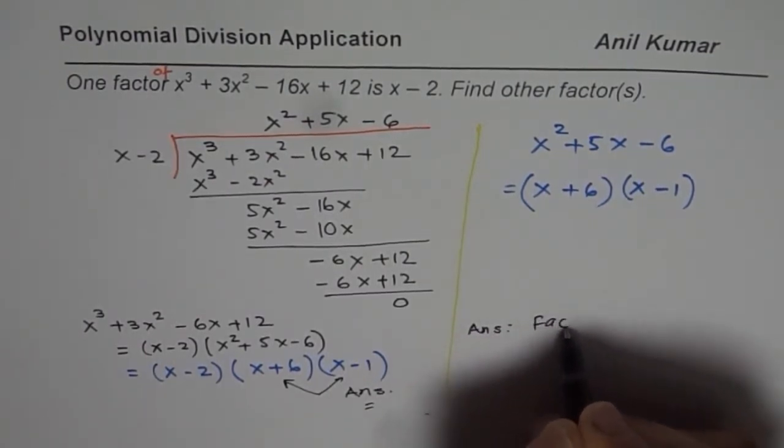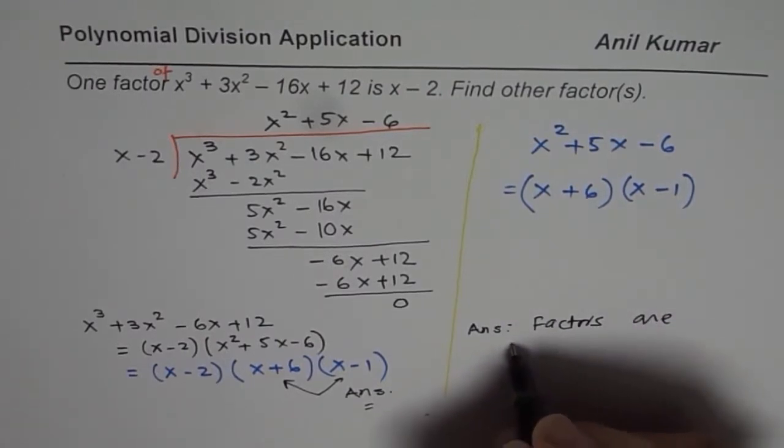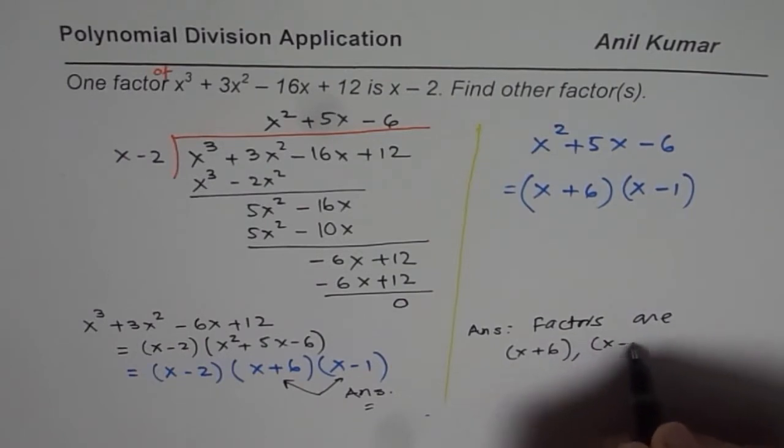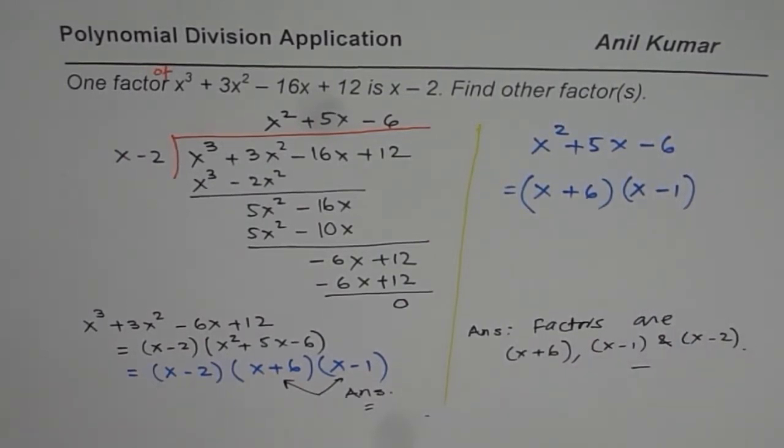So we can write our answer, and we can say that the factors are x + 6, x - 1, and given to us x - 2. So that is how such questions can be answered. I hope the concept is absolutely clear.